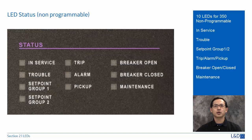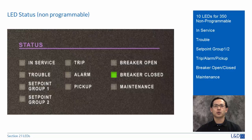Breaker open LED can be programmed to red or green color. When the breaker is open, the indicator will be on continuously. Breaker closed LED is also programmed to red or green color. When the breaker is closed, this indicator will be on continuously.